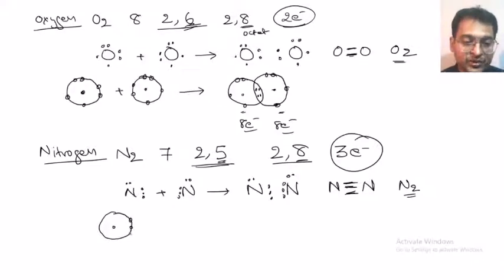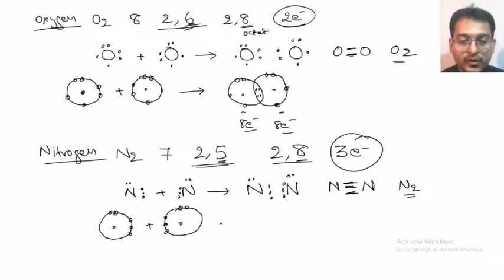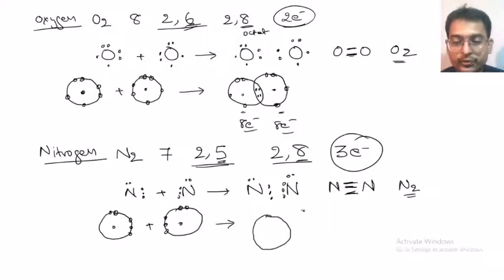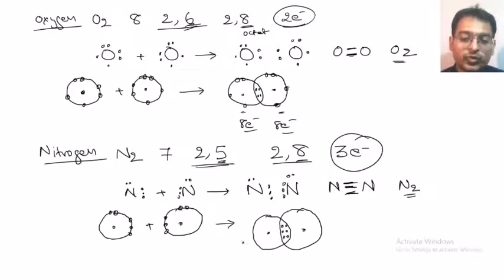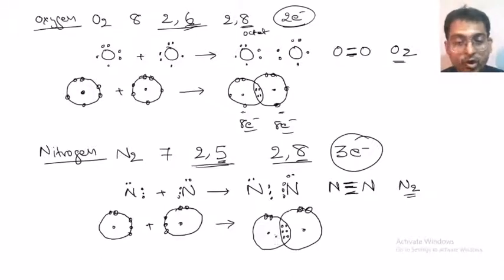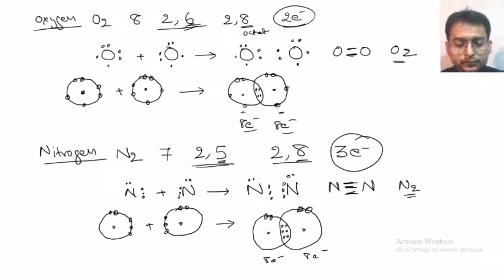In this N2 molecule there are 3 covalent bonds, meaning 3 pairs of electrons are being shared. If we represent this in the orbital diagram structure, one atom combining with another atom of nitrogen — 3 pairs of electrons overlap: 1 pair, 2 pair, and 3 pair. Here it is 6 plus 2 = 8 electrons, and here also 6 plus 2 = 8 electrons. They have reached the octet configuration.